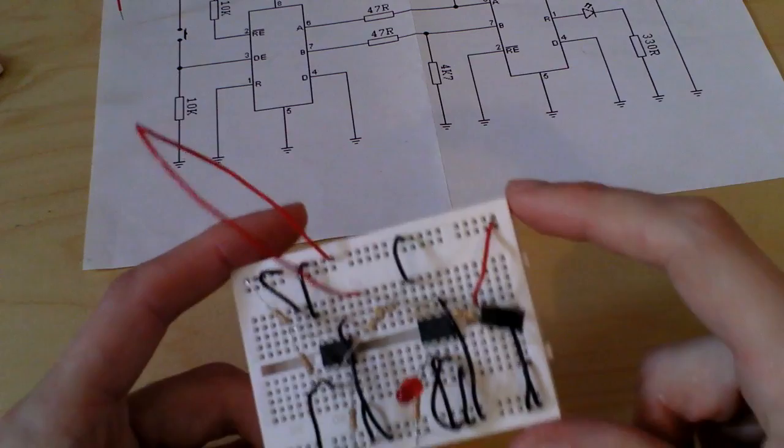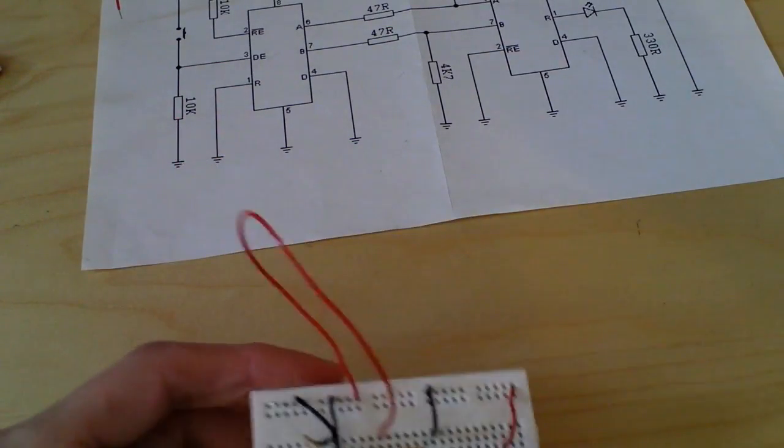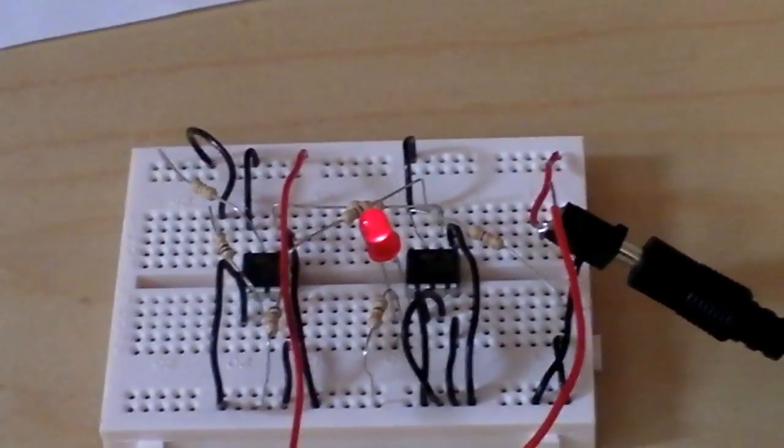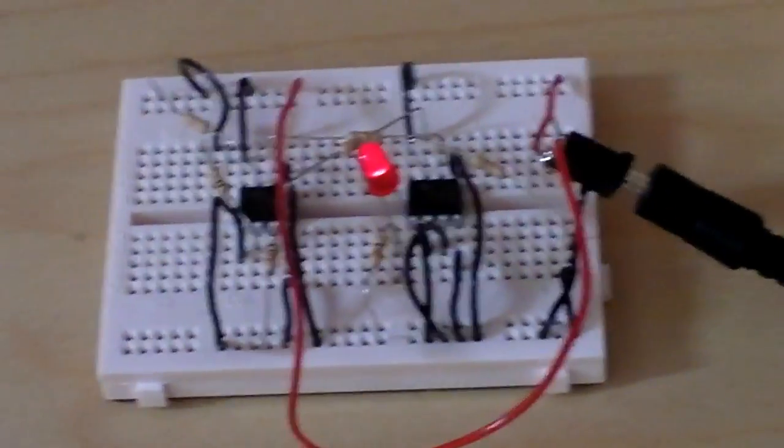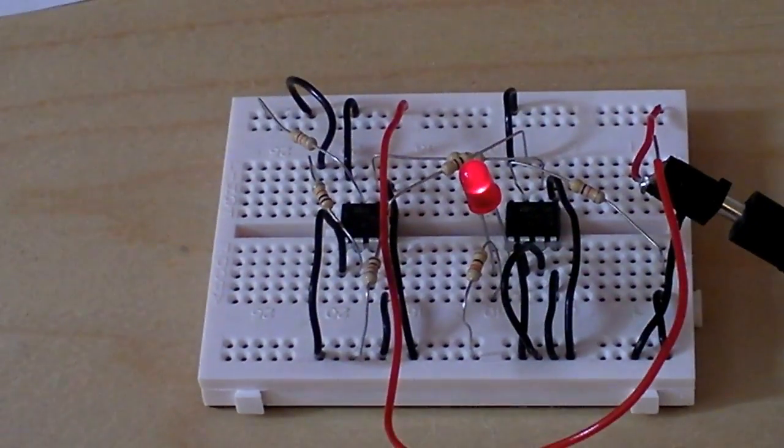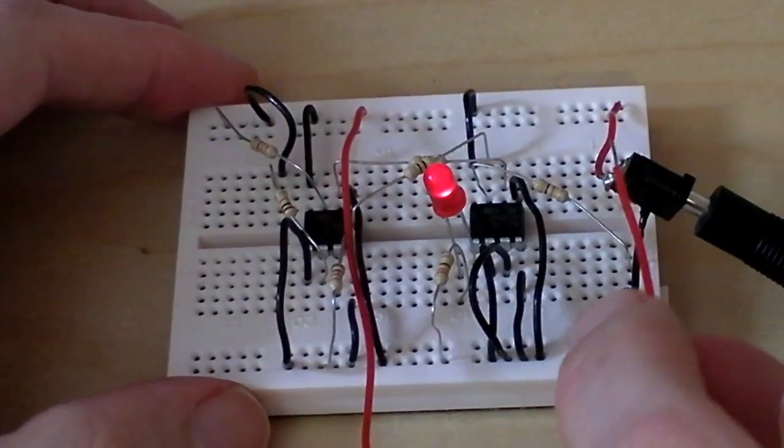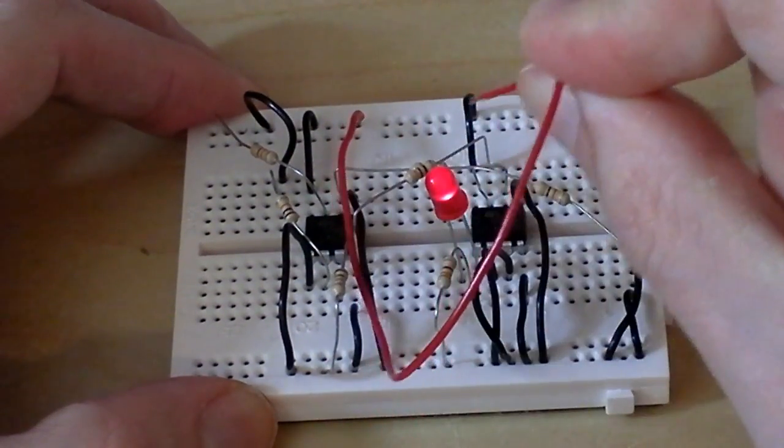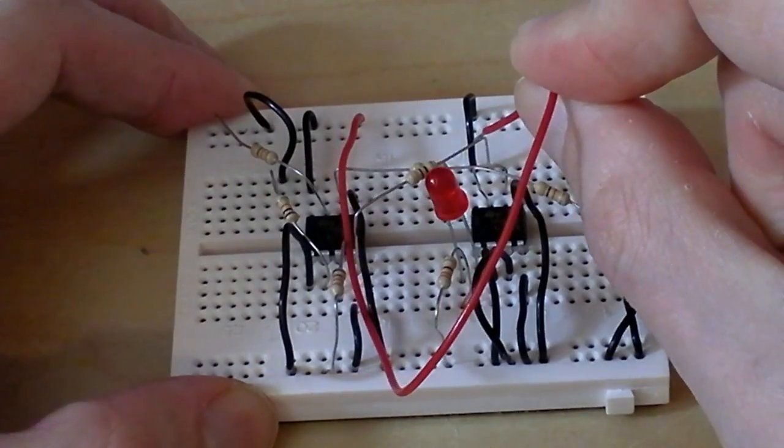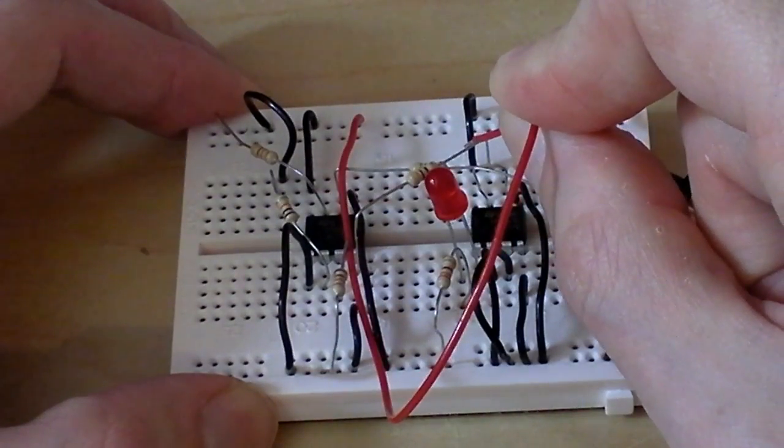I'll power it up. I shall power it up so that you can see it working. Okay, as you can see I've powered it up, and if I take the wire here and touch the resistor there, that effectively closes the switch and the light goes out just as I imagined it would.